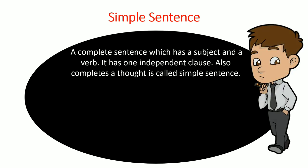A complete sentence, as you all know, consists of a verb and a subject, and it should complete a thought. Similarly, simple sentences have a subject and a verb. It has one independent clause and also completes a thought — that is called a simple sentence. The first example is: he goes with his friend. In this sentence we have 'he' as the subject.